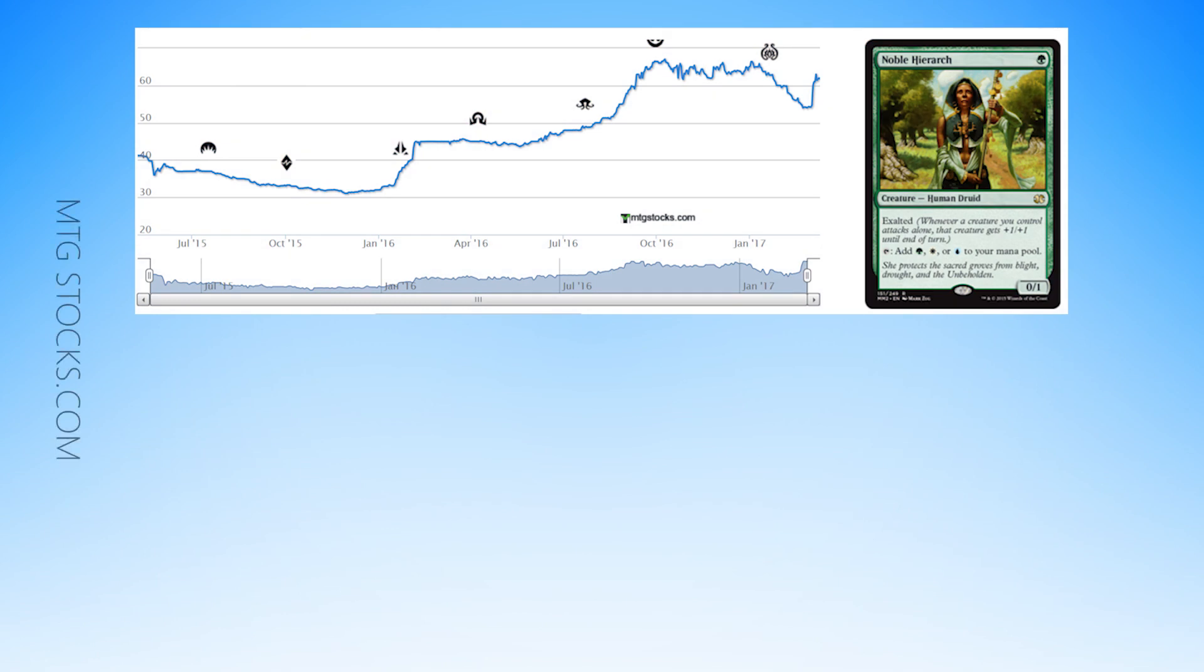I found two cards that are a lot more similar to the Zendikar fetches, so that we can decide how we might expect them to move. The first card is Noble Hierarch. It was printed basically once before, and it's used in a lot of green decks. Anywhere where you might want a mana elf, it's kind of hard to overlook Hierarch because of its awesome exalted ability, and the fact that it doesn't just make green, it also makes white and blue. So, it's a pretty darn good elf.